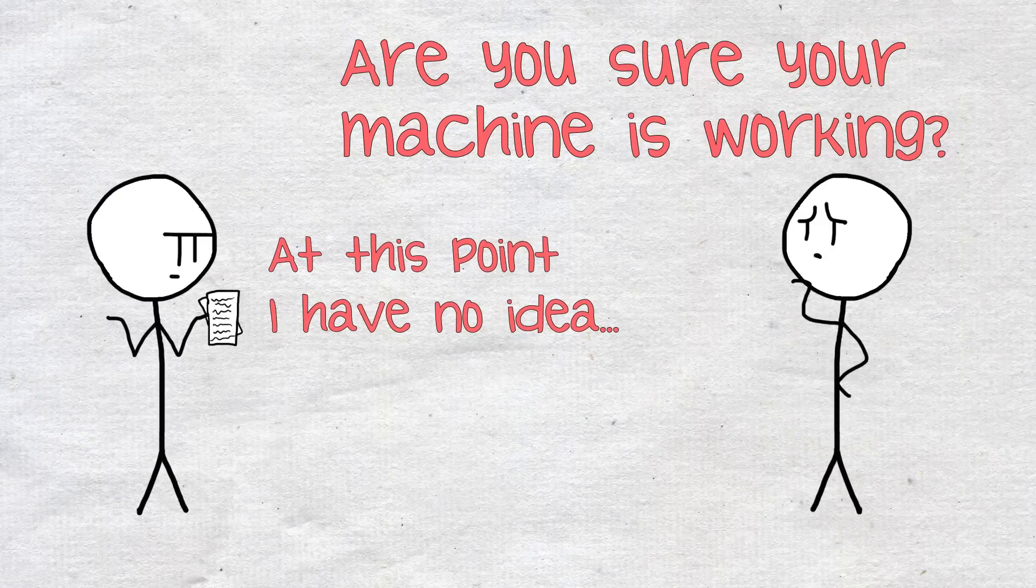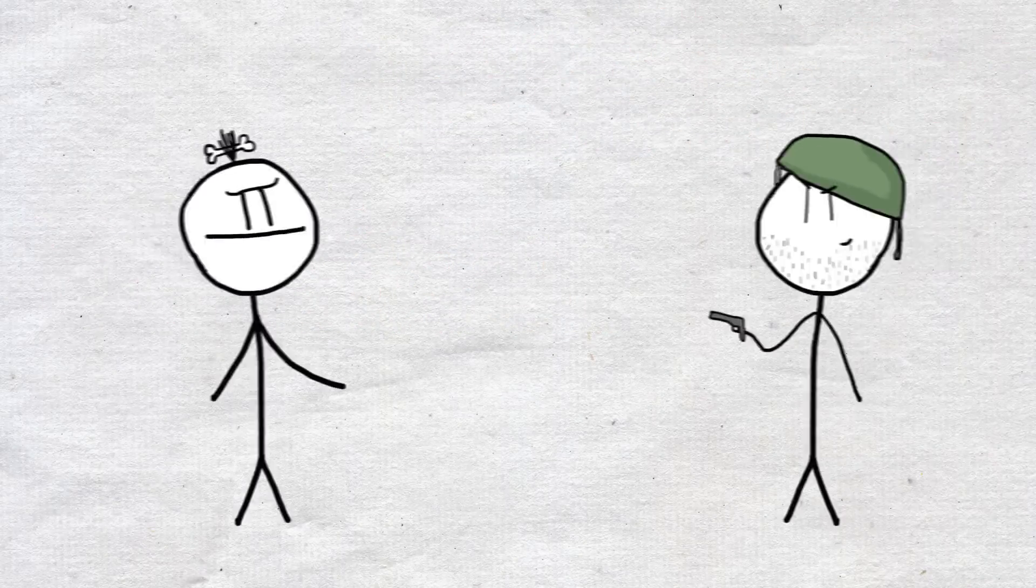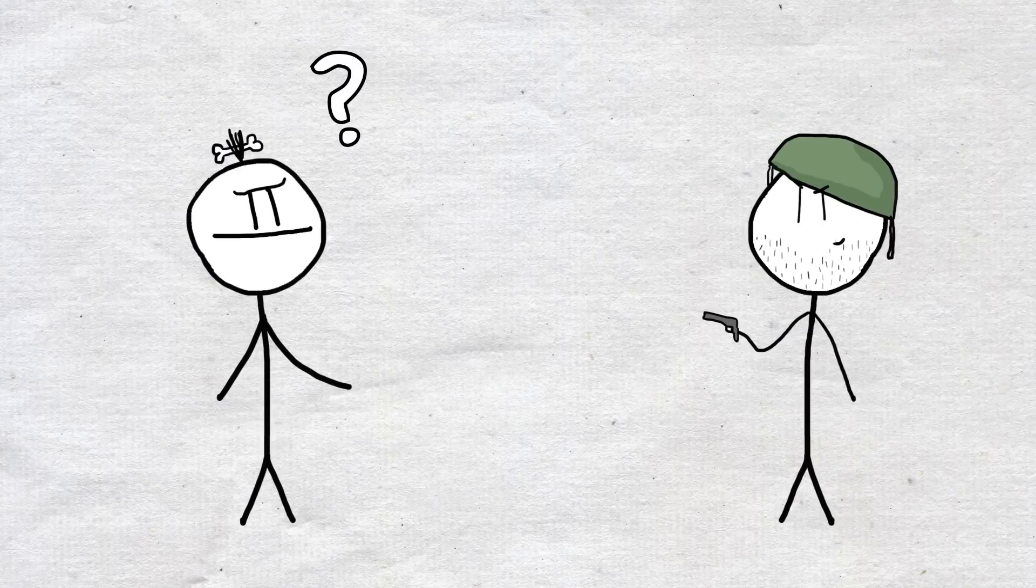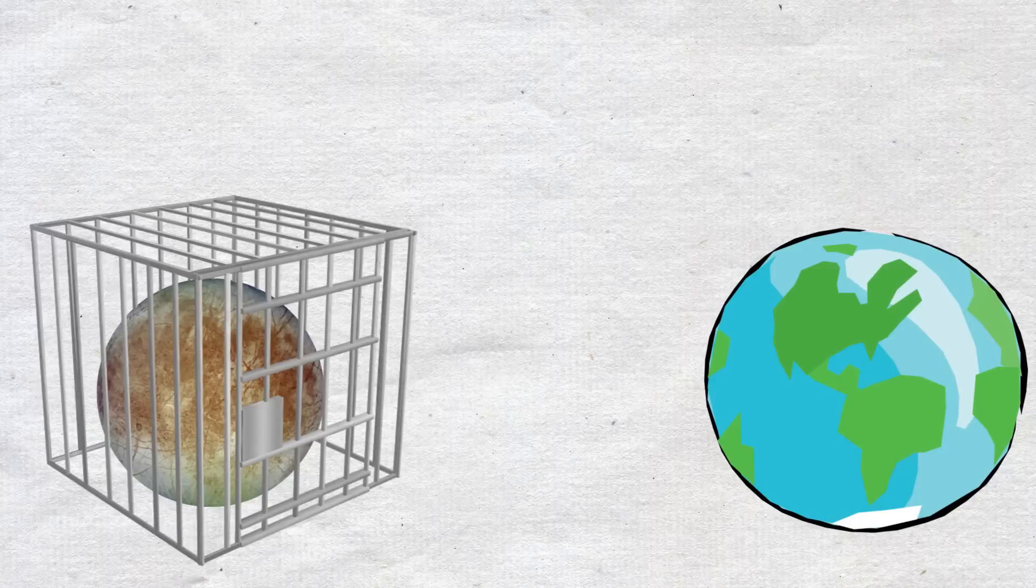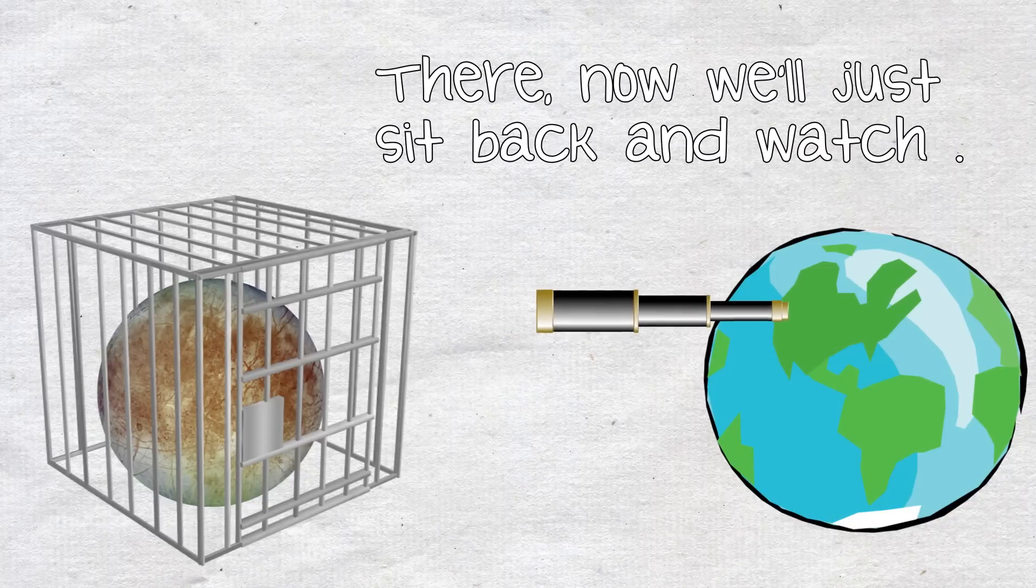As one final possibility, what if we were to discover the presence of a very primitive species just starting to use simple tools? This would be the truest test of humanity's disposition towards extraterrestrial life. As with the previous scenario, we could look to the zoo hypothesis for one example of how best to handle fledgling life forms.